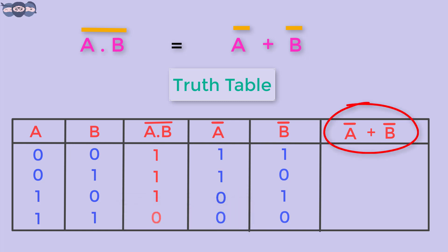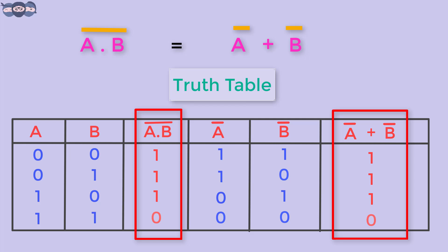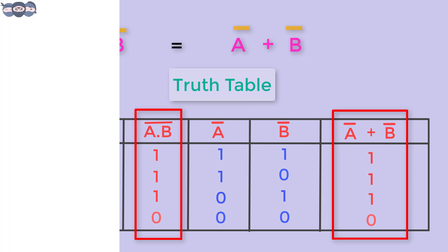Let us fill the last column A bar OR B bar. When both the inputs are one, OR gate produces a high output. The output continues to be one when any of the inputs is high. When both the inputs are zero, the output is zero. Well, the values match.